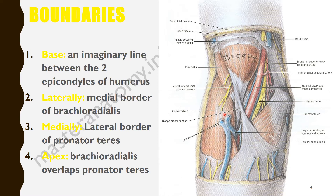This brachioradialis muscle has a lateral side and a medial side. We are looking at the cubital fossa that is in the depression in between the arm and the forearm, just in the center. So we are looking at the medial side of the brachioradialis, while for the pronator teres, we are looking at its lateral border. So the pronator teres forms the medial border and the brachioradialis forms the lateral border.